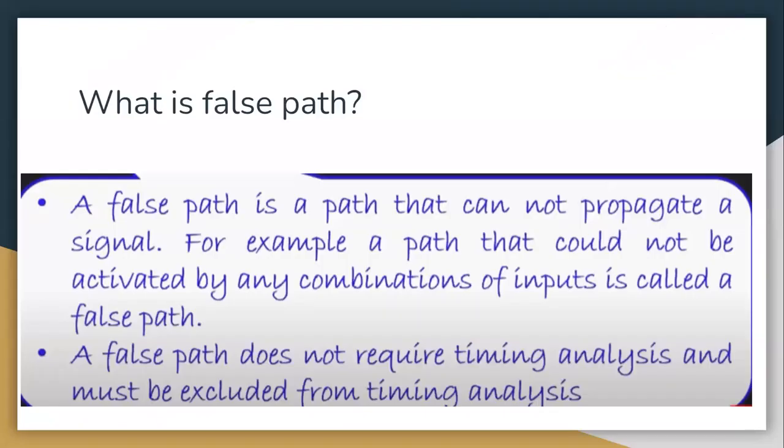It's a very common interview question for companies these days: what is a false path? The straightforward answer is that a false path is a path that cannot propagate a signal — for example, a path that could not be activated by any combination of inputs.